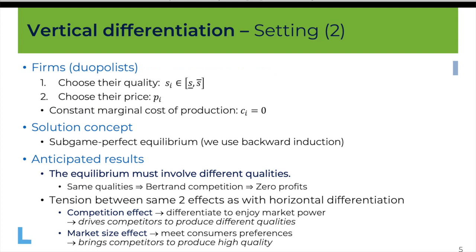There are two firms and they play a two-stage game. They first choose the quality S_i within the range S-lower-bar to S-upper-bar, and once they have done so they choose the price. At the second stage when they choose the price, they observe the quality choices made before. To simplify the analysis, we assume that the cost of producing a unit of any quality C_i is equal to zero.